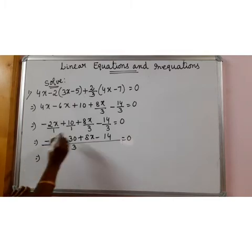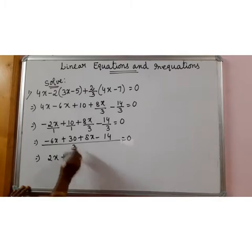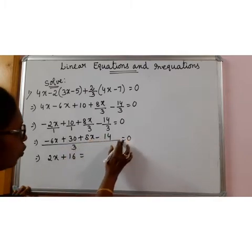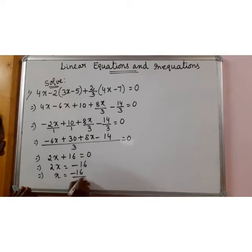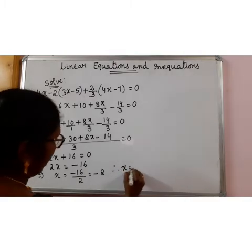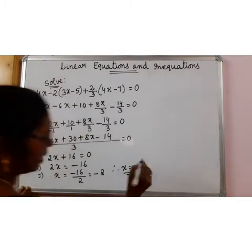So minus 4x is 6x plus 8x is 2x plus 13 minus 14 is 16 is equal to 3 into 0 is 0. So 2x is equal to minus 16 or x is equal to minus 16 by 2 that is minus 8. That means x is equal to minus 8.